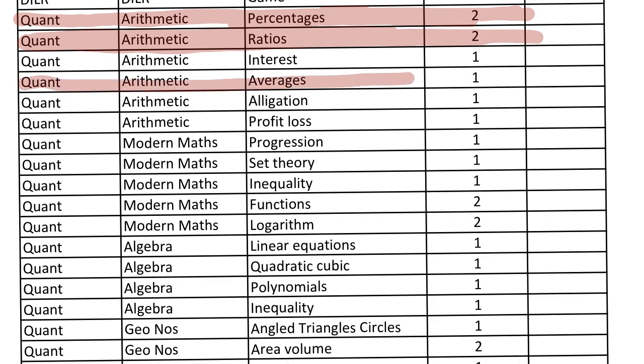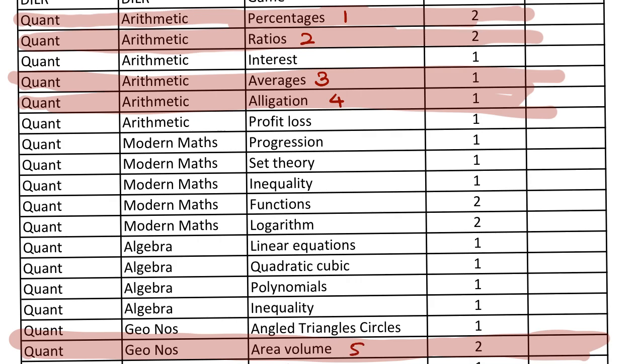Number three is averages. Number four is allegation, which is mixtures basically. And number five is area volumes. Area volume is nothing but formulas, it's donkey work. Remember the formula and your life is set. Make a notebook for the formulas: percentages, ratios, averages, allegation, and area volumes. This chapter is going to come in every exam: SNAP, NMAT, CMAT, CET. These five topics are the low-hanging fruit.